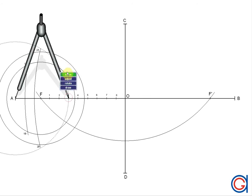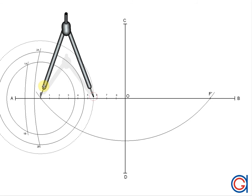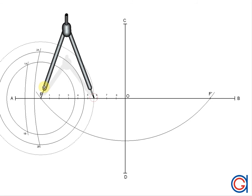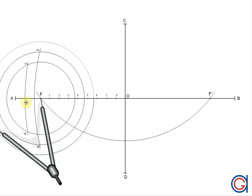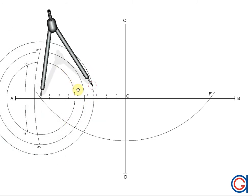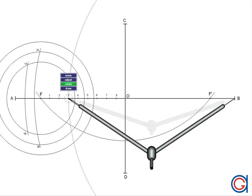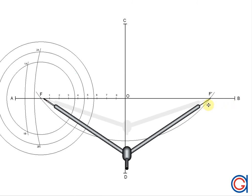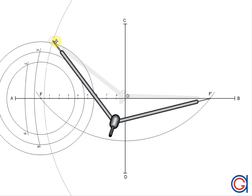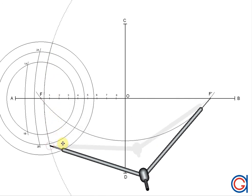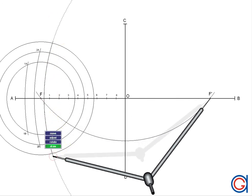We are going to continue this process, setting our compass to the length A3, and we set our compass on the focal point F and draw another circle, our third circle. Now we set our compass to the length B3, and with this length, we set it on our focal point F' and scribe two arcs on the previously drawn circle. And here we get two new points, 3A and 3B.